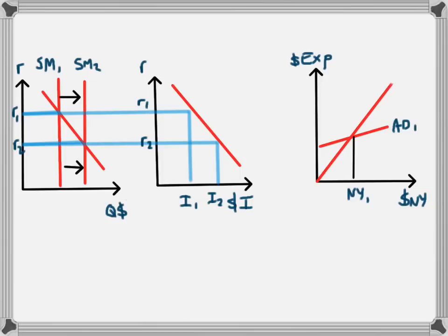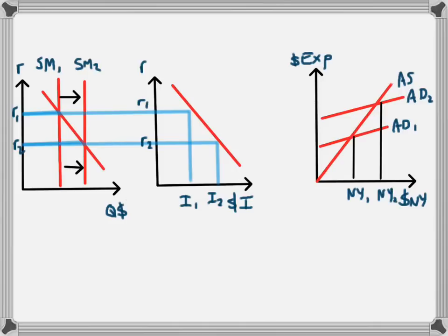The third panel shows the aggregate demand and aggregate supply model. At the original position where interest rate was R1, investment equaled I1, giving aggregate demand AD1 and national income NY1. As a result of the increase in investment, aggregate demand increases from AD1 to AD2. AD1 equals C plus I1 plus G plus X minus M, and AD2 equals C plus I2 plus G plus X minus M. The result is a new equilibrium national income — increasing from NY1 to NY2 — as the outcome of this expansionary monetary policy.